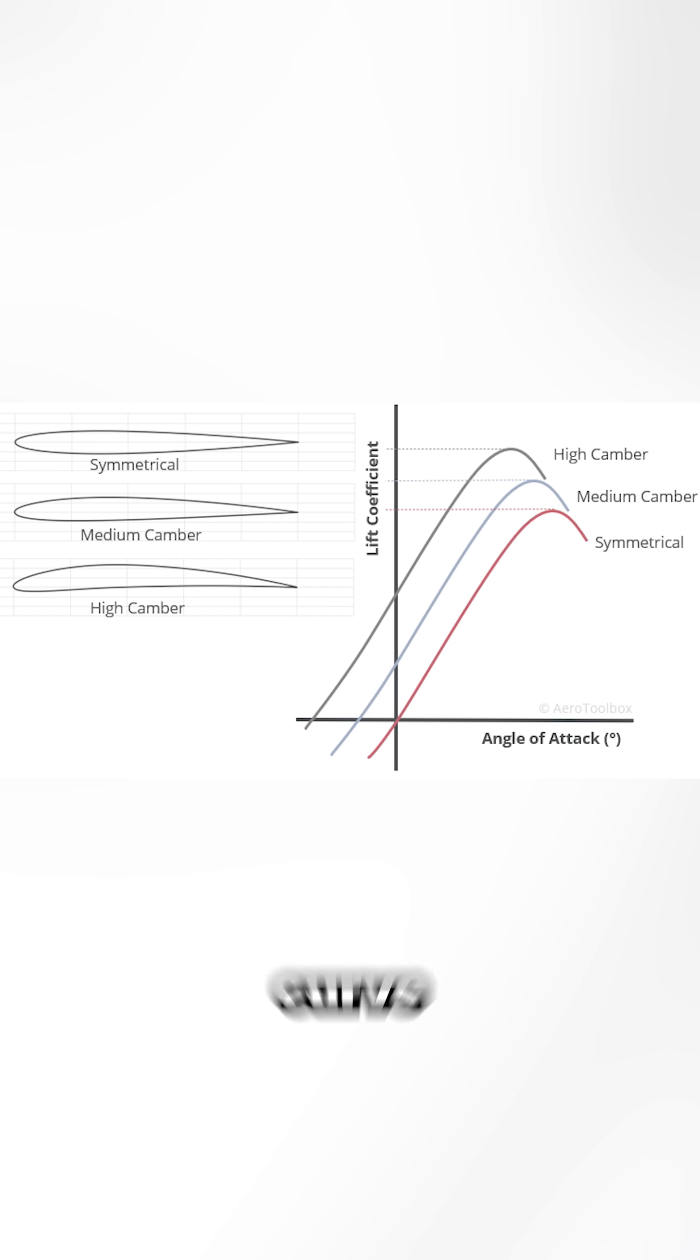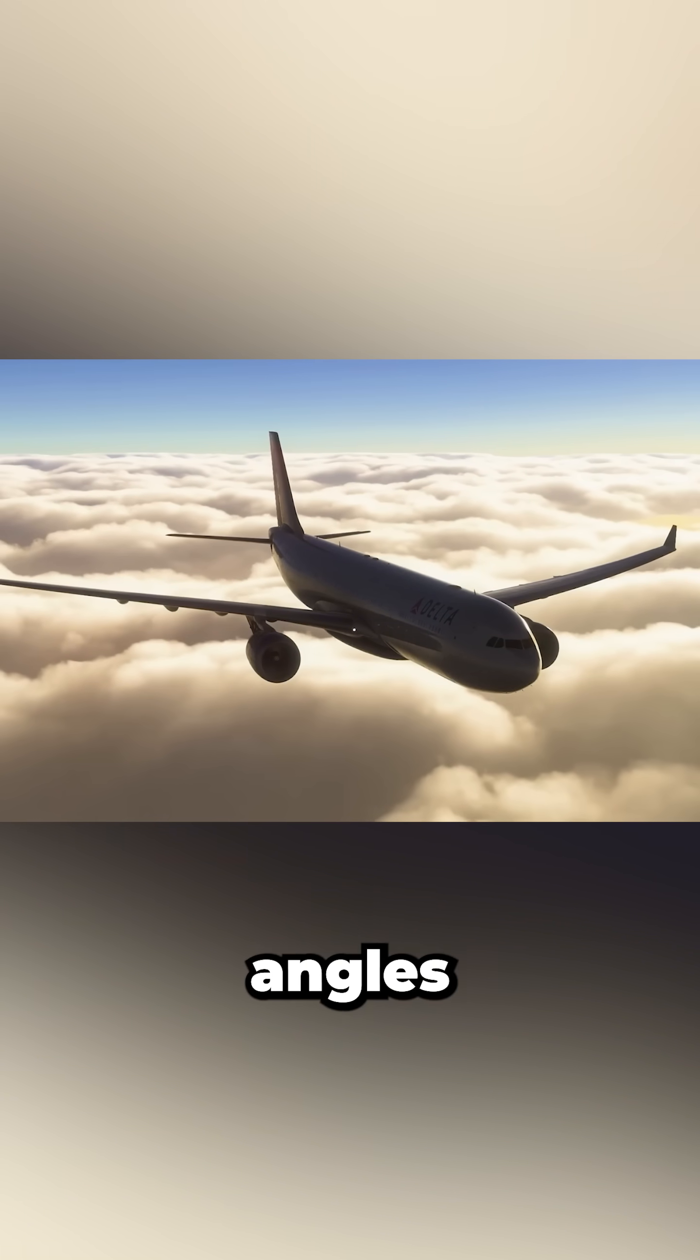More camber shifts the entire lift curve leftward and generally raises the peak CL, letting the wing generate more lift at lower angles of attack.